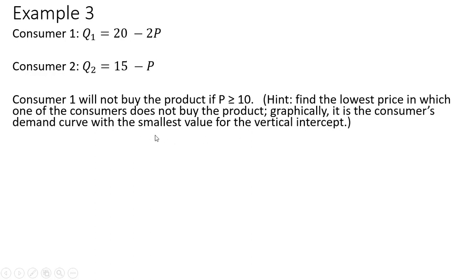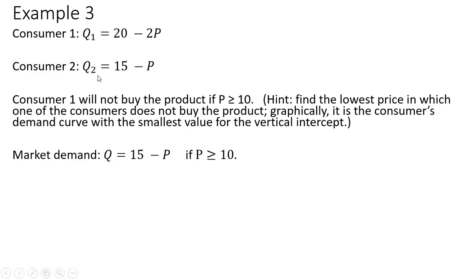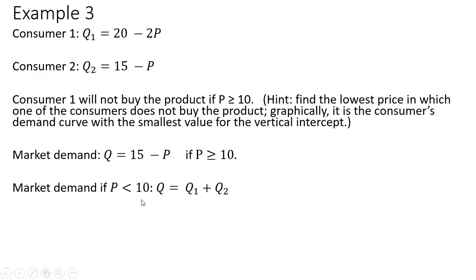Graphically, it will be the consumer's demand curve with the smallest value for the vertical intercept. So the market demand, if the price is greater than or equal to $10, will be given by consumer two's demand. Consumer two will buy the product at a price of $11 — specifically four units, since 15 minus 11 equals 4. But consumer one would not buy negative two units; consumer one will buy zero units. So market demand when price is greater than or equal to $10 is just consumer two's demand.